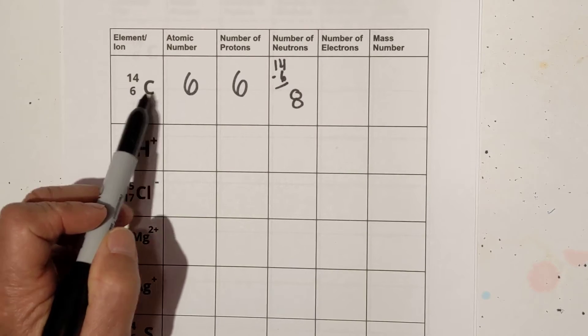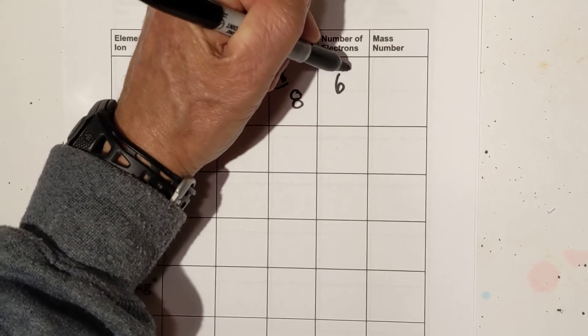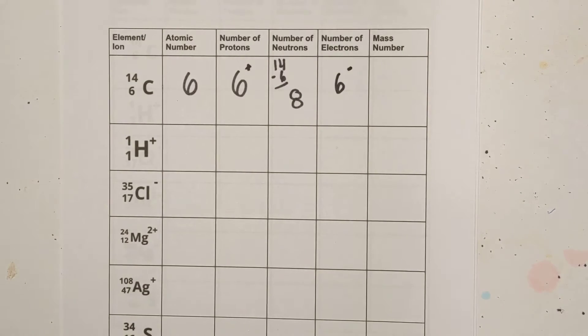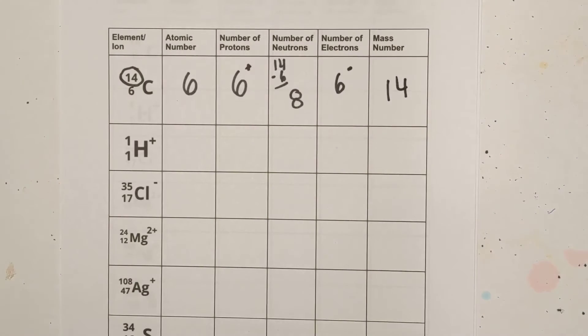So if it's neutral, the number of protons, which are positive, will equal the number of electrons, which is a negative number. And then the mass number is right here with the 14. Okay, so there's the first example.